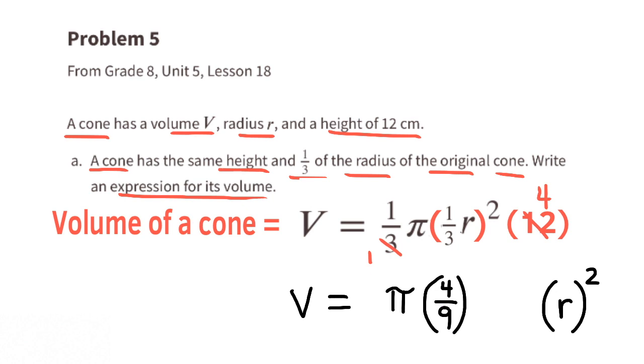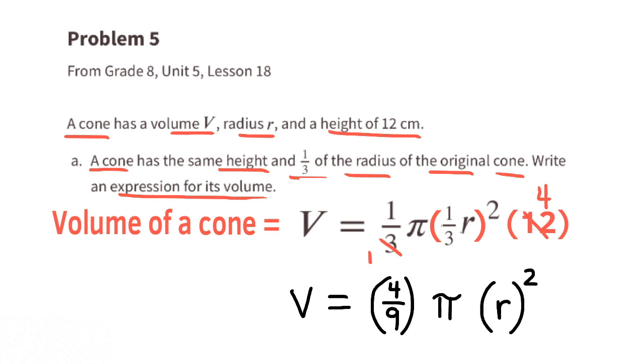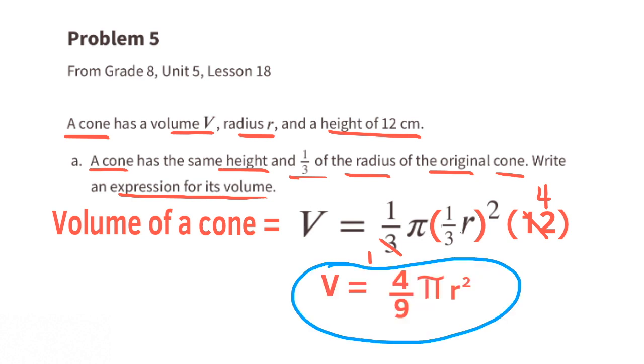Again since the order of multiplication doesn't matter we can move these around. Four-ninths times pi times r squared. The volume of the cone described in A is four-ninths pi times r squared or four-ninths pi r squared.